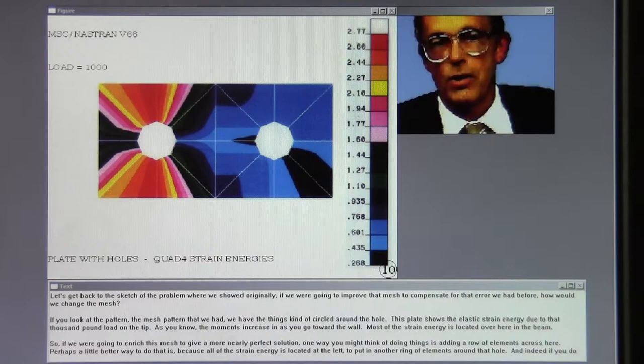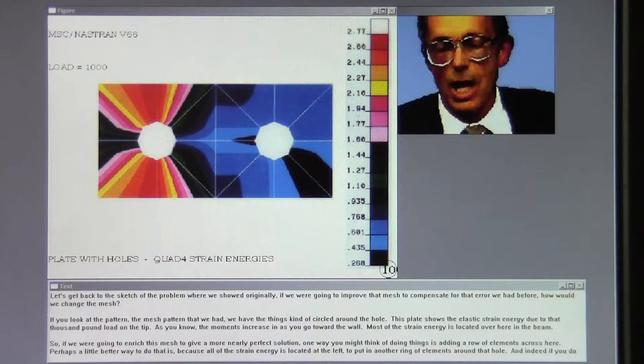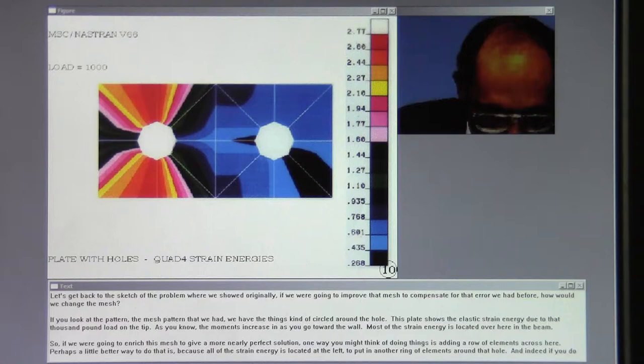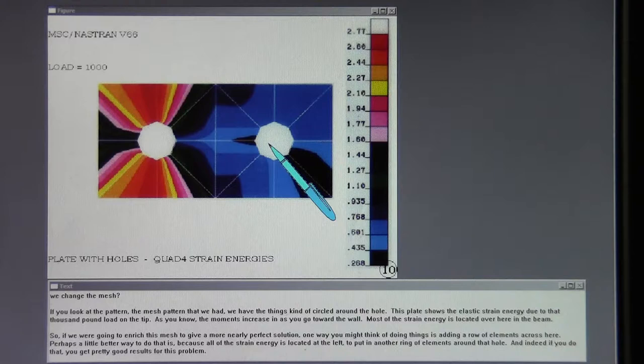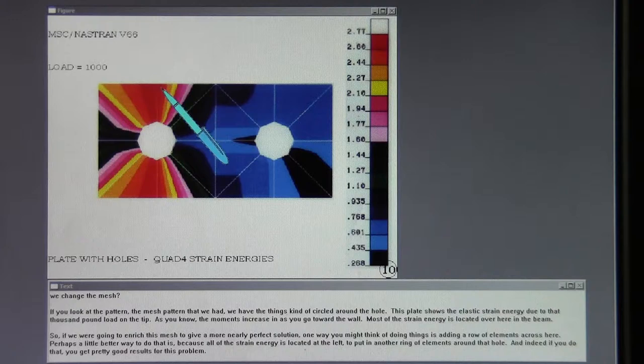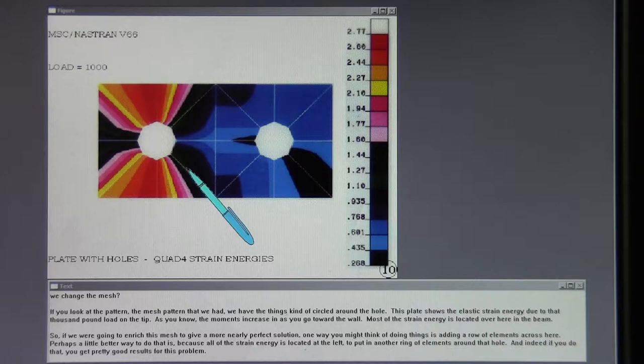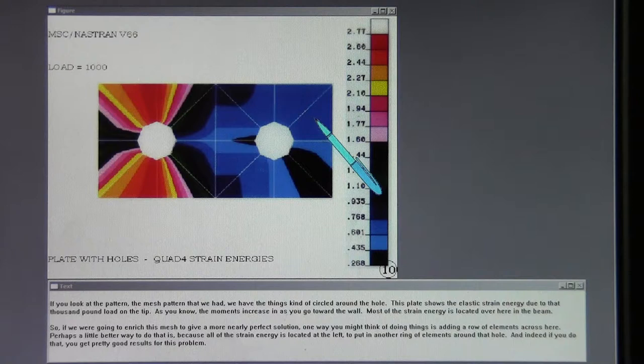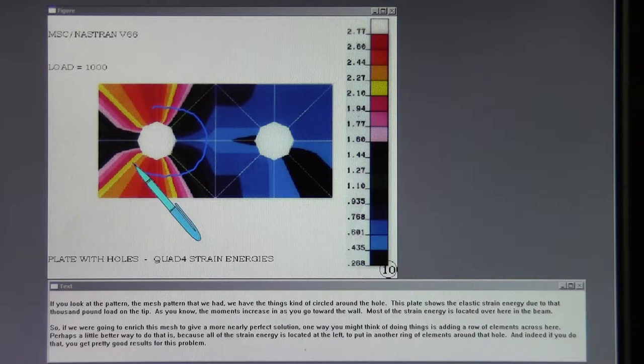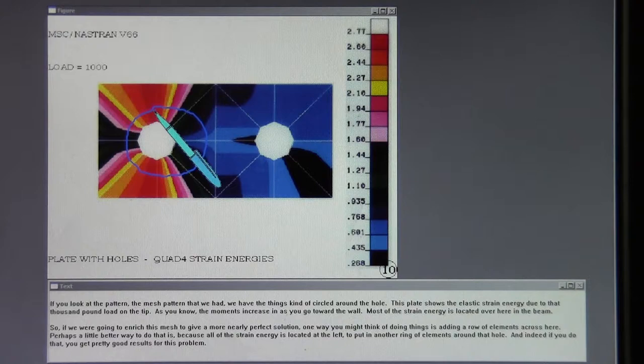Let's get back to the sketch of the problem that we showed originally. If we were going to improve that mesh to compensate for that area we had before, how would we change the mesh? If you look at the pattern, the mesh pattern that we had, we have the things kind of circled around the hole. This plot shows the elastic strain energy due to that thousand pound load on the tip. As you know, the moment's increasing as you go toward the wall, most of the strain energy is located over here in the beam. So if we were going to enrich this mesh to give a more nearly perfect solution, one way you might think of doing things is adding a row of elements across here. Perhaps a little better way to do that is because all of the strain energy is located at the left to put in another ring of elements around that hole. And indeed, if you do that, you get pretty good results for this problem.